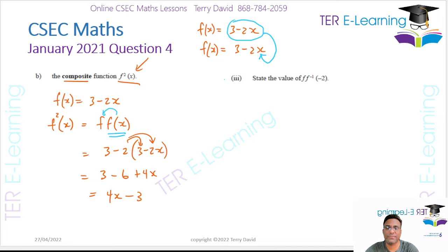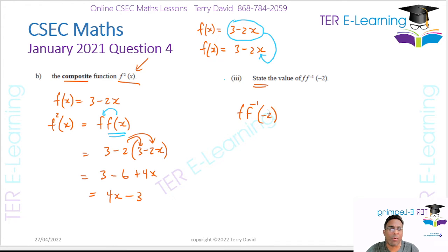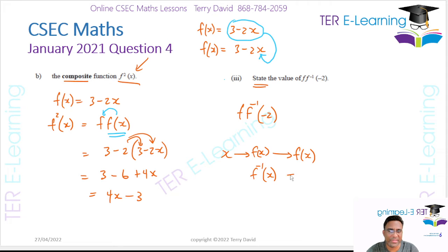The next thing we need to do is find f of f inverse of minus 2. If you understand how a function works, you have an input x going into the function and you get out f of x. The inverse of the function means if you take your output and put it back in, you get back your x value. So the output here is minus 2, and putting that back gives you minus 2 — nothing changes. So f of f inverse of minus 2 is minus 2.